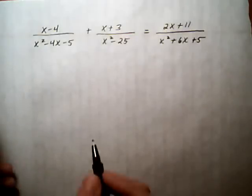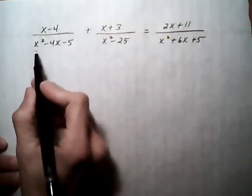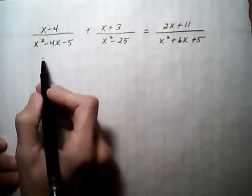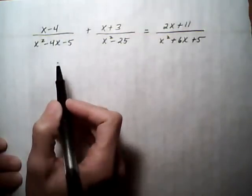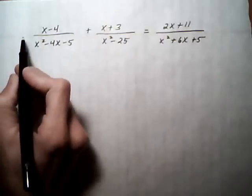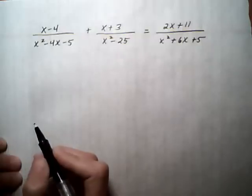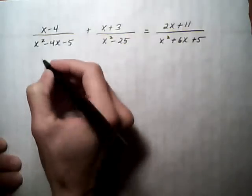Solve a rational equation. First thing we want to do is factor the denominators. That way we're going to be able to figure out what the LCD is. Once we know the LCD, we're going to multiply every separate fraction by the LCD and make all the denominators cancel out.